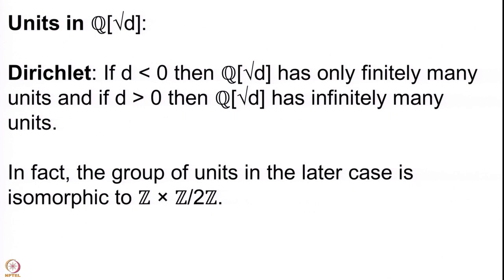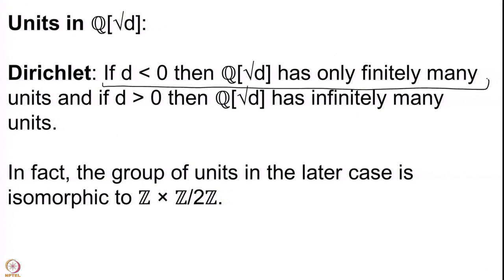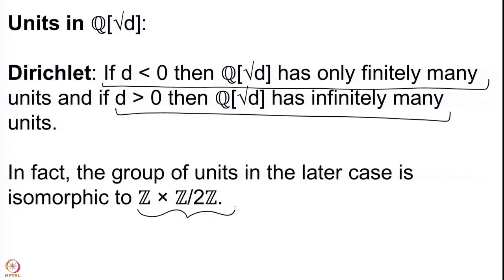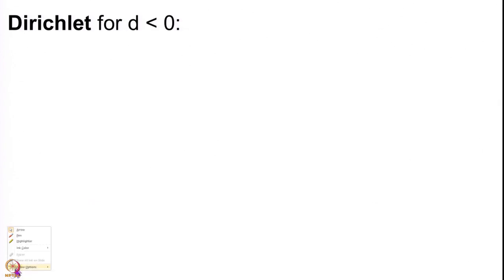Clearly not every element in O_K need be invertible — for instance, 2 is in the algebraic integers and you cannot divide by 2. So the question is: what are the units in Q(√D)? There is a nice result of Dirichlet, which we had in the last lecture, describing units in all O_K. For quadratic extensions, the statement is: for negative D there are only finitely many units, and for positive D there are infinitely many, with the group of units of the form Z × Z/2Z.